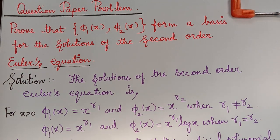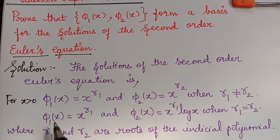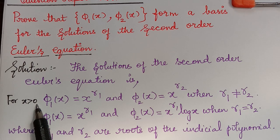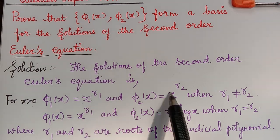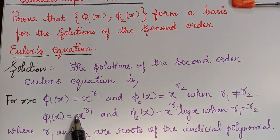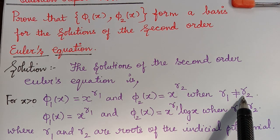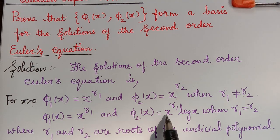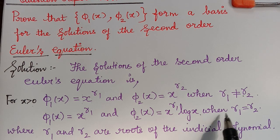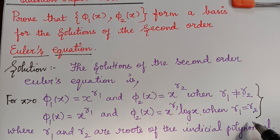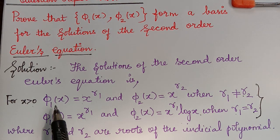This was the solution we obtained in our previous lecture. For x greater than 0, as well as for x less than 0, the solutions are |x|^r₁ and |x|^r₂ when the roots are distinct, and |x|^r₁ and |x|^r₁ · log|x| when the roots are equal.